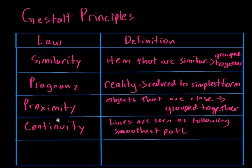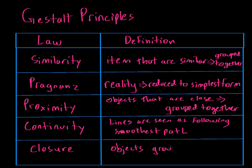The final Gestalt Principle is the law of closure. The law of closure says that objects grouped together are seen as a whole — we ignore gaps and complete contour lines.